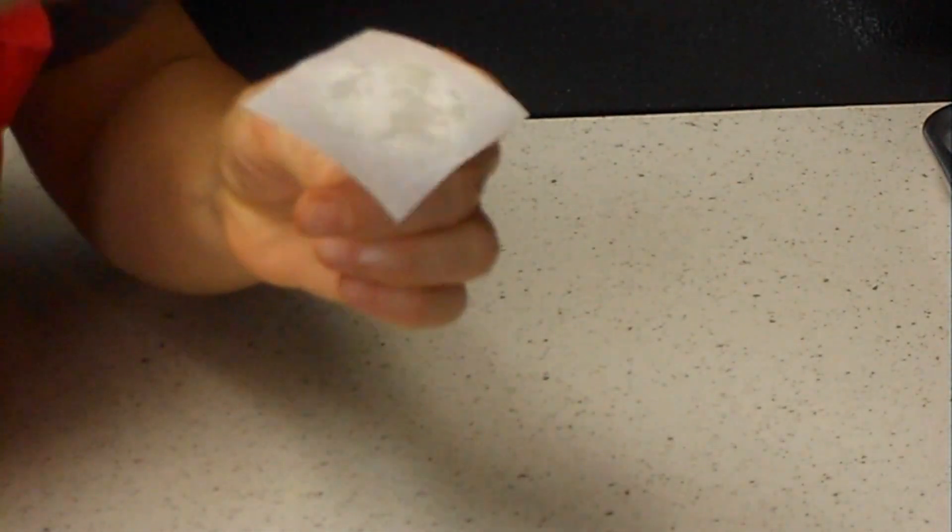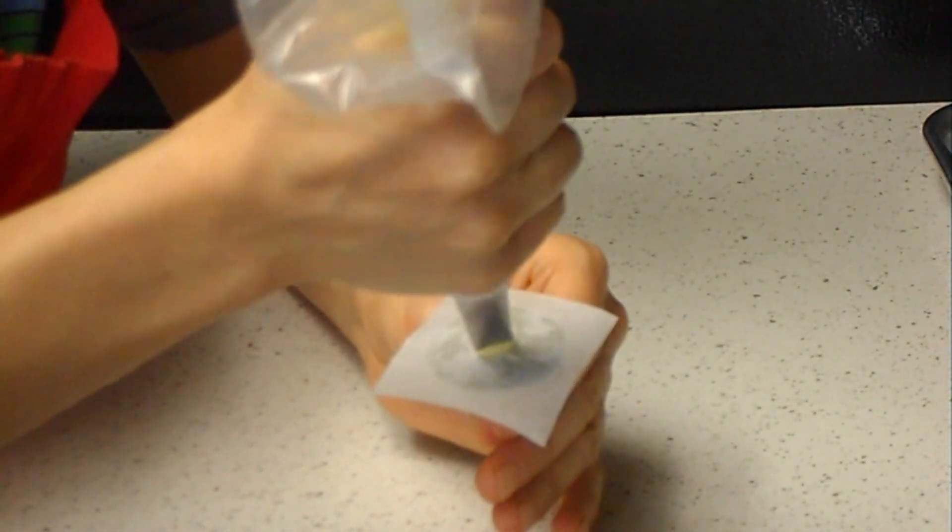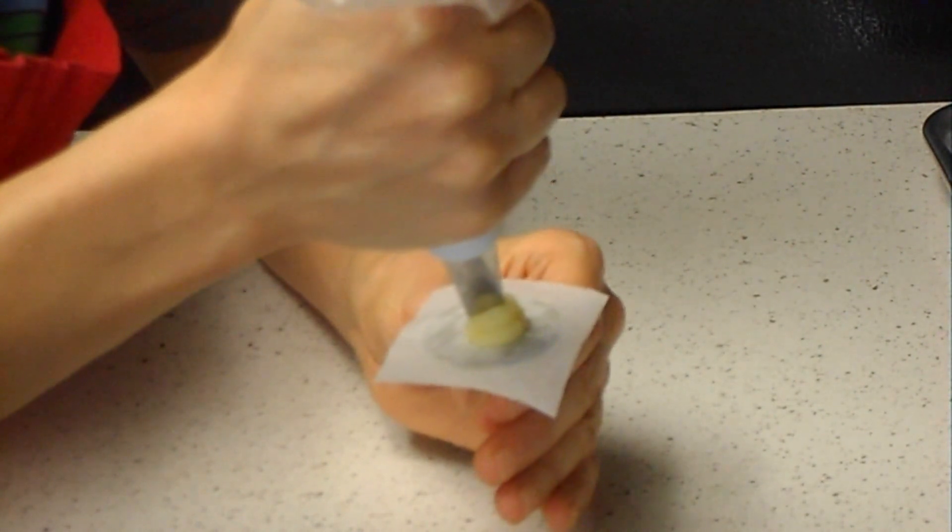And now you could use for the first step just a round tip, just to make the first step. And then we're going to pipe just exactly what we do when we make a rose.